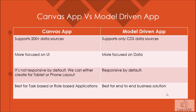Comparing the two: canvas app supports 200+ data sources, while model-driven app only pulls data from CDS. Canvas app focuses more on the UI side, while model-driven app focuses more on the data side.